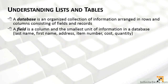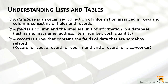A field is a column in Excel — they are interchangeable. It's the smallest unit of information in a database, things like last name, first name, address, item number, cost, or quantity. The second term is a record. Just like a field is equivalent to a column, a record is equivalent to a row, and the row contains fields of data that are somehow related to one another.